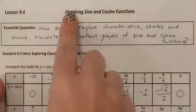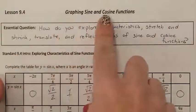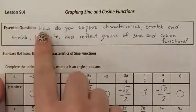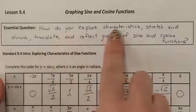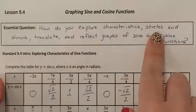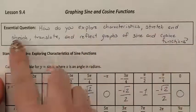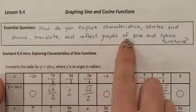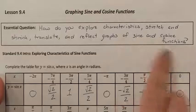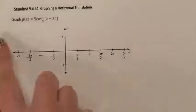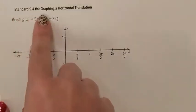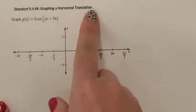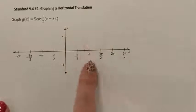Lesson 9.4, graphing sine and cosine functions. Our essential question: how do you explore characteristics, stretch and shrink, translate, and reflect graphs of sine and cosine functions? Standard 9.4 number four, graphing a horizontal translation.